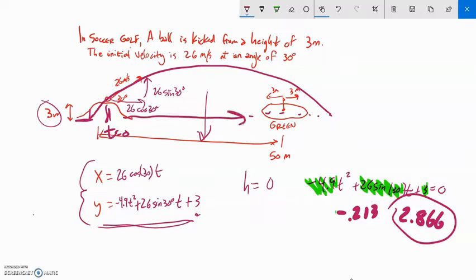Now if I want to know where it happens in that direction, I'm going to use that x component. So 26 times cosine of 30 times t equals 2.866, and I'm just going to enter that into my calculator.